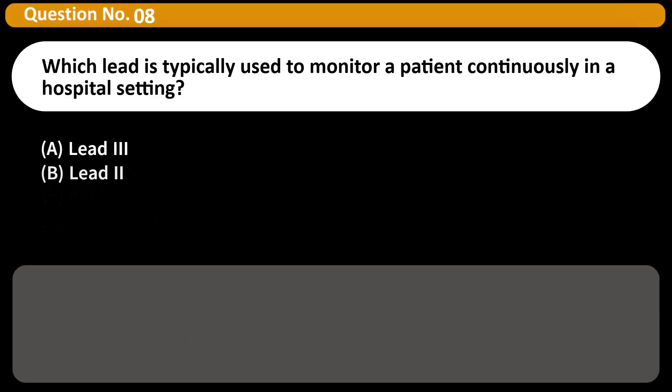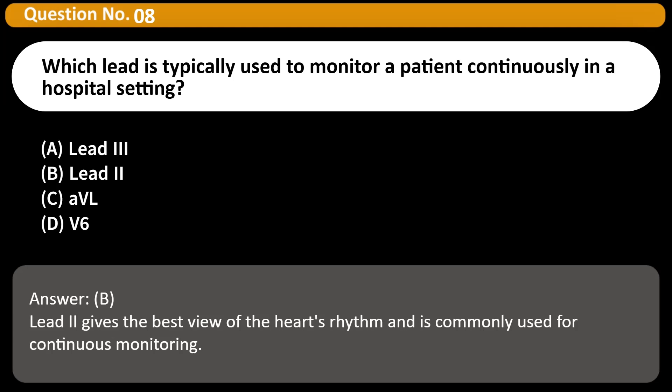Which lead is typically used to monitor a patient continuously in a hospital setting? A. Lead 3 B. Lead 2 C. AVL D. V6 Answer B. Lead 2 gives the best view of the heart's rhythm and is commonly used for continuous monitoring.